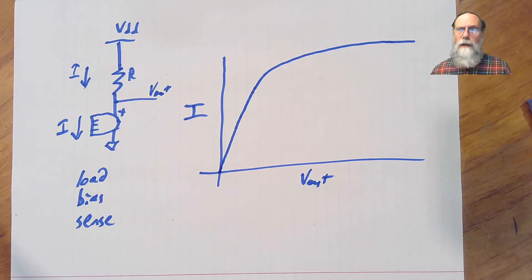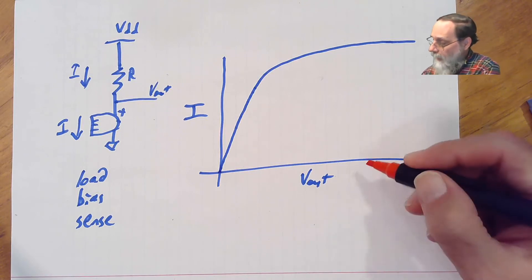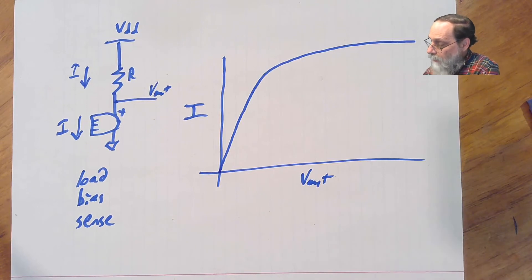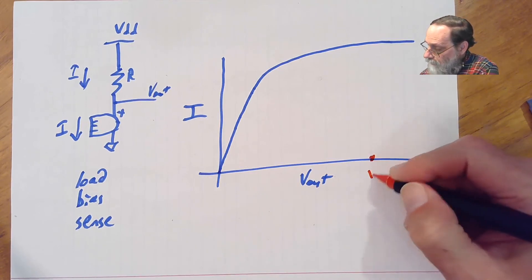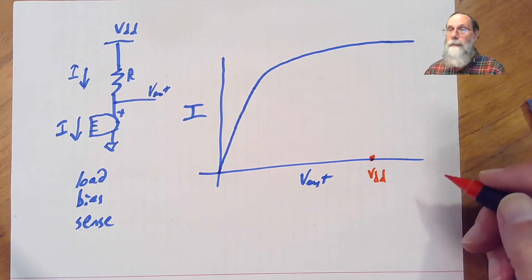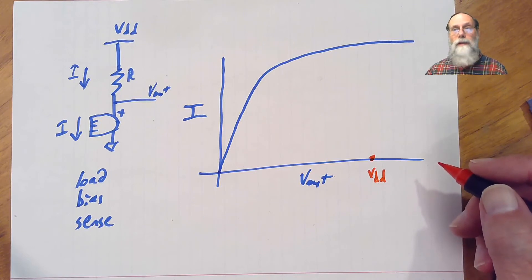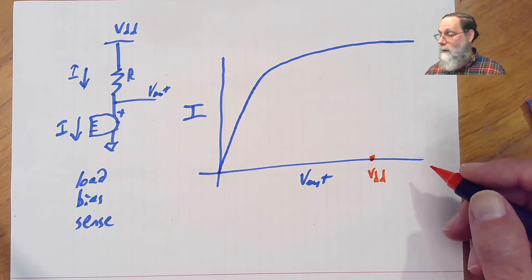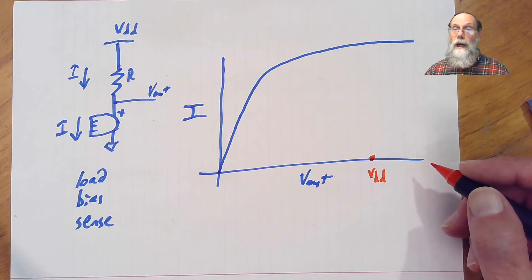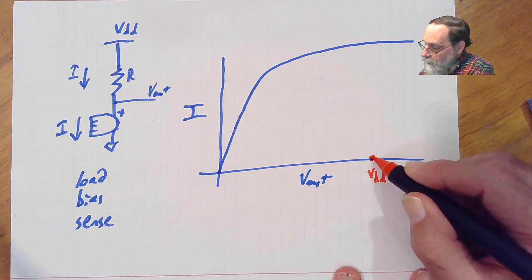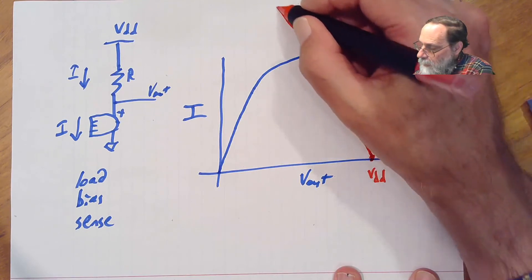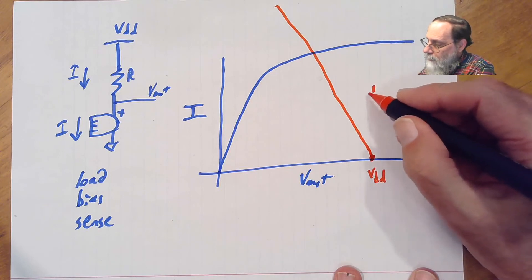What does it look like for the resistor? Well, if we've got no current going through the resistor, there's no voltage drop across the resistor, we're going to have that V out is just Vdd when there's no current. And when there's more current, as we increase the current, the voltage at V out will drop because there's an I times R voltage drop across the resistor. This will produce a straight line with a slope minus one over R.